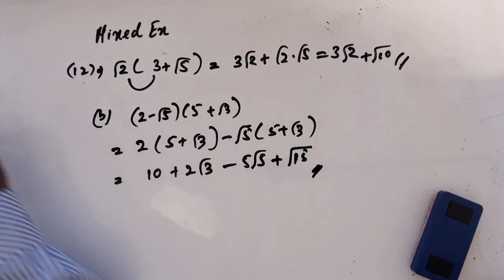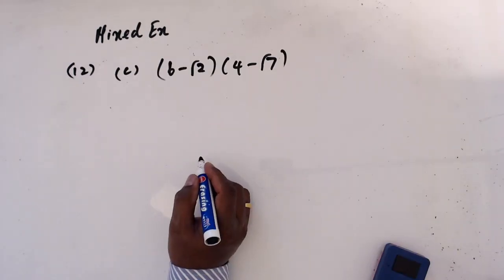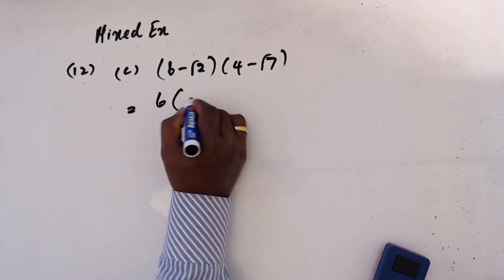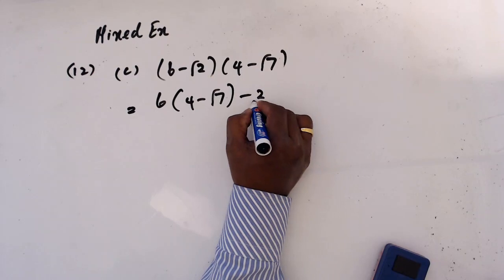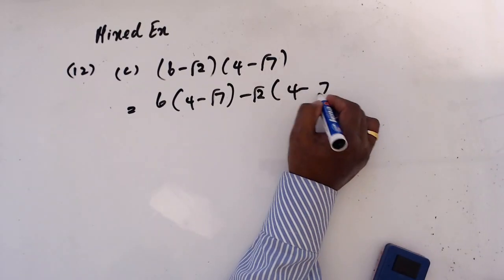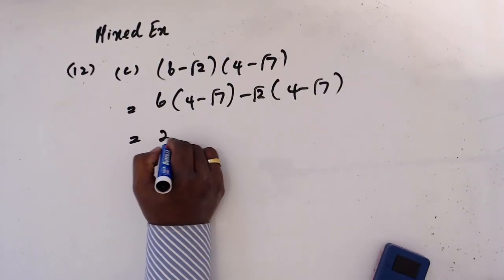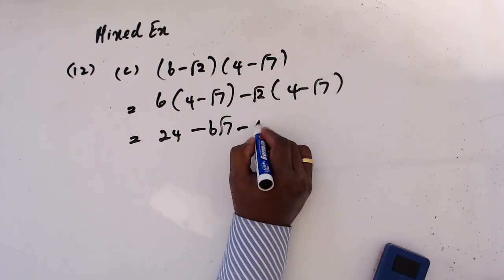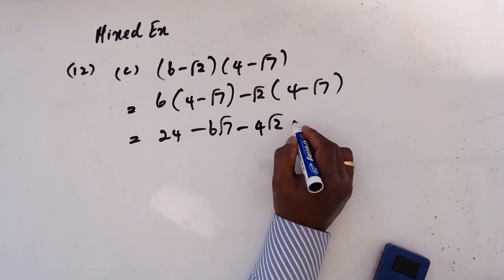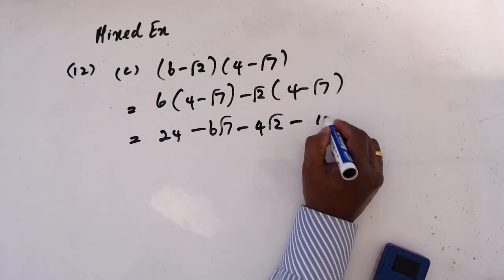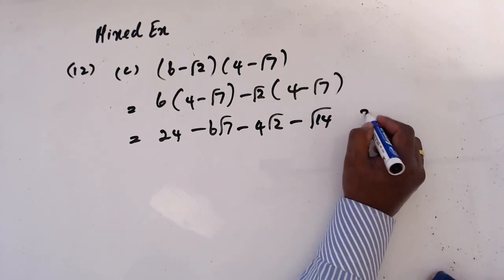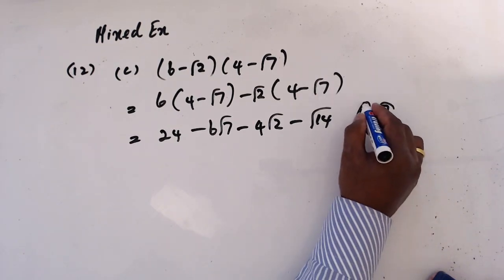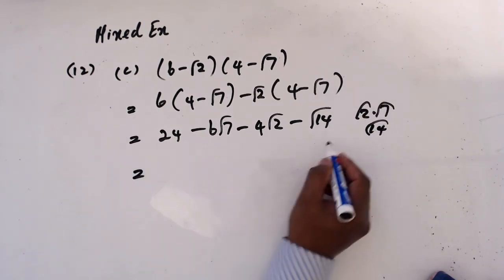For the next part: 6 times (4 - √7). This is going to be 24, and then 6 times √2 gives 4√2, and √2 times √7 gives √14. So that is 24 + 4√2 - √14.